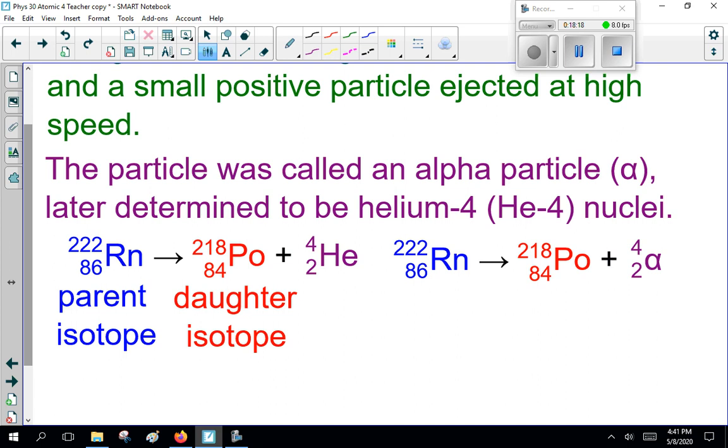So, if we start with radon-222 parent isotope, it will spontaneously decay into a polonium-84 daughter isotope, and give off an alpha particle, 4-2 helium. Now, we will write it like this, 4-2 helium. We will also write it as 4-2 alpha particle, but quite often we will just write it as an alpha particle without the 4-2, because we know what it is, and we're lazy.